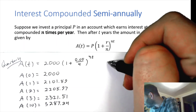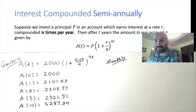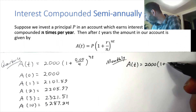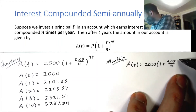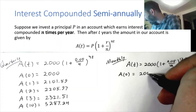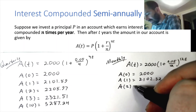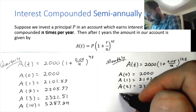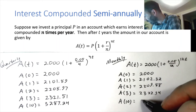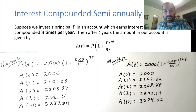What if we compound monthly? There are 12 months in a year, so the formula is 2,000 times (1 + 0.05/12) raised to the power 12t. At time zero we get $2,000, the initial investment. After 10 years we get $3,294.02. Which is the better way to go — compounding quarterly or monthly? It's a little bit better to compound monthly.